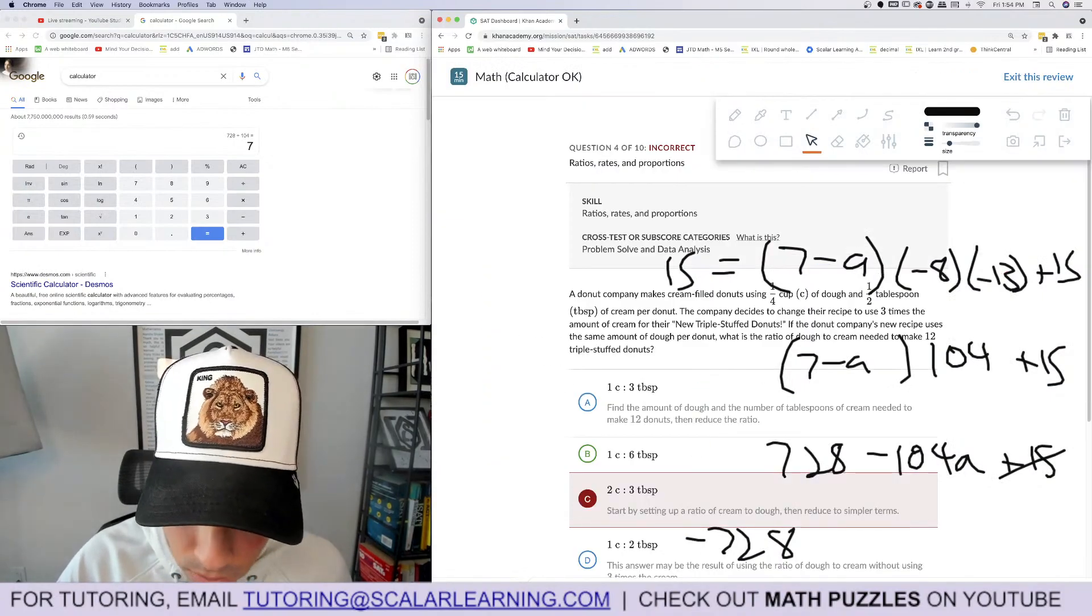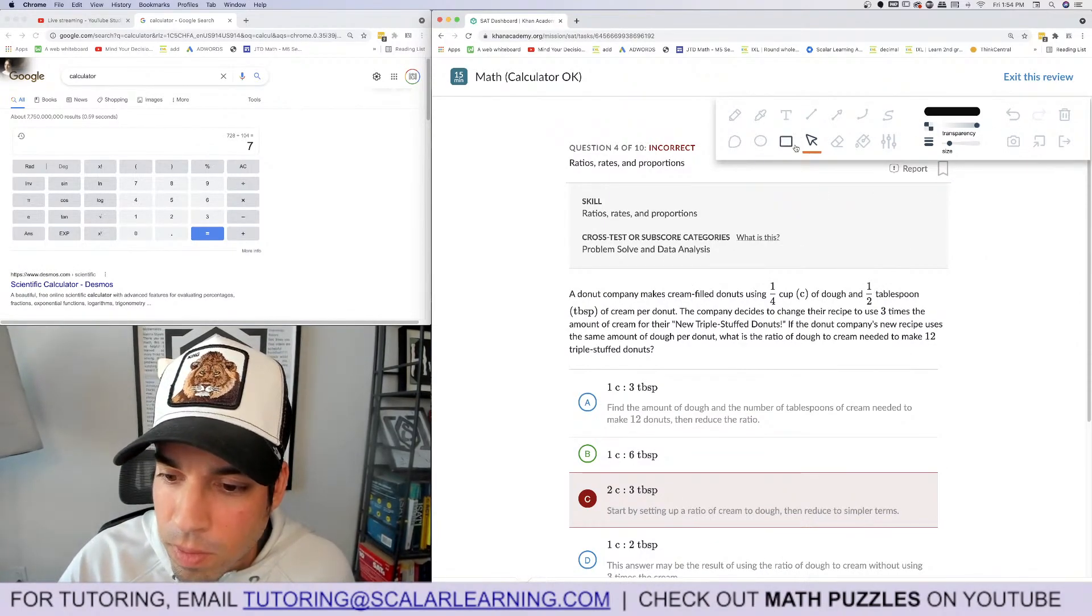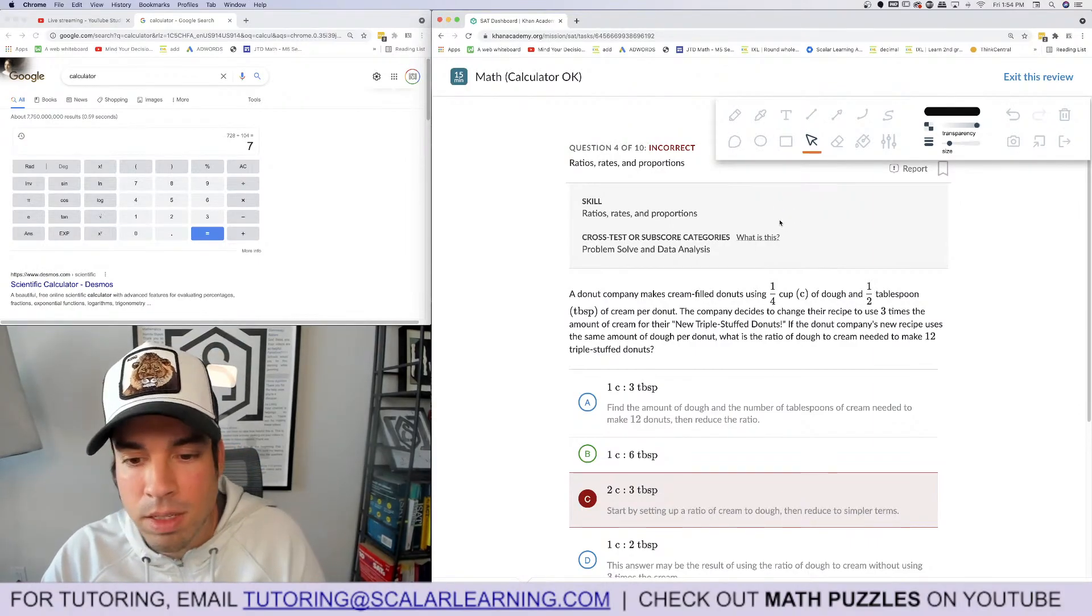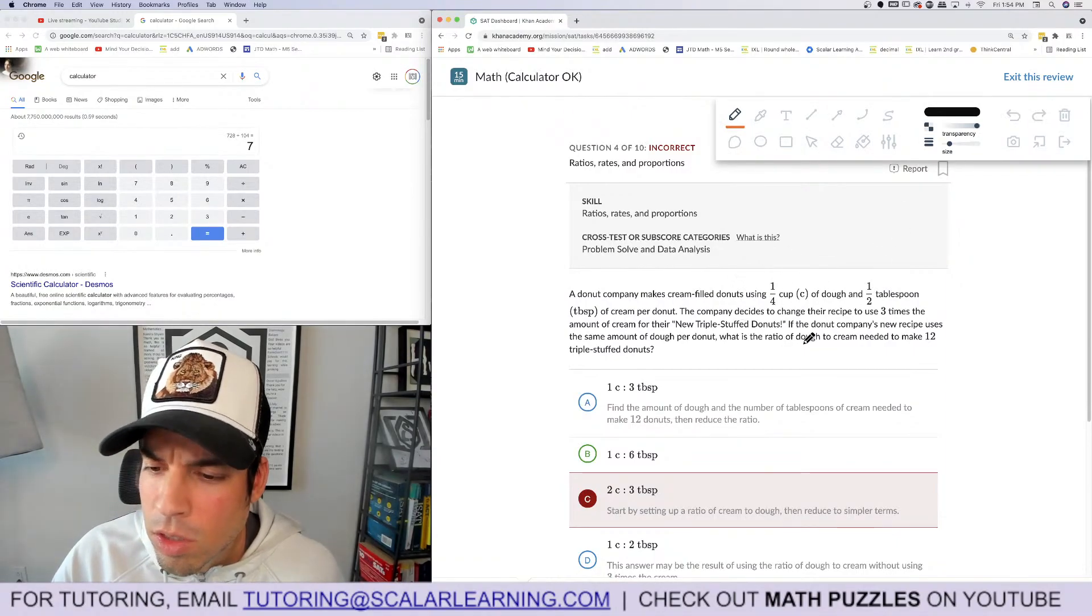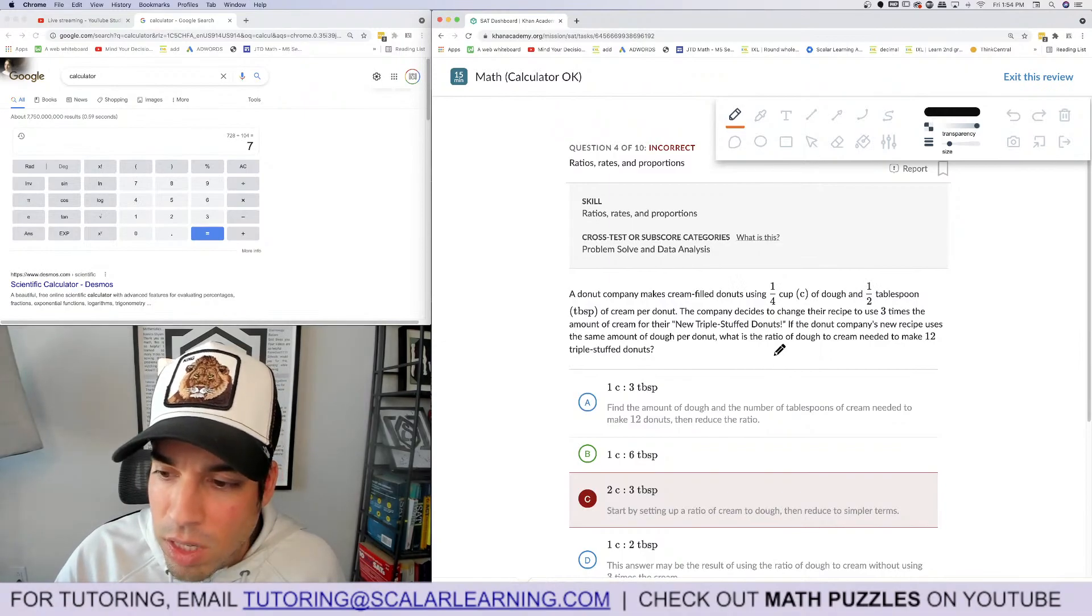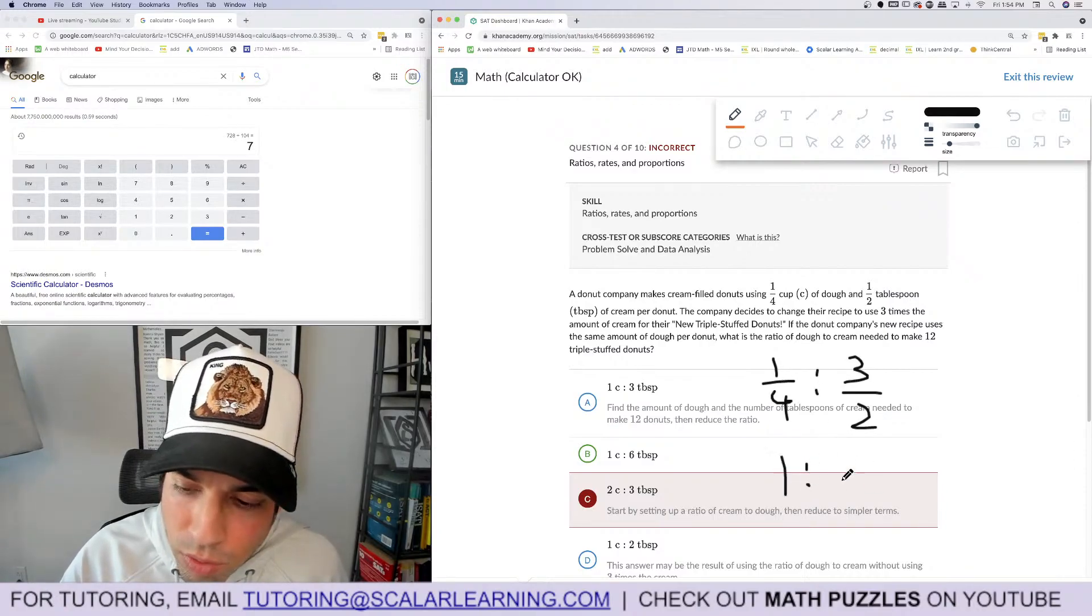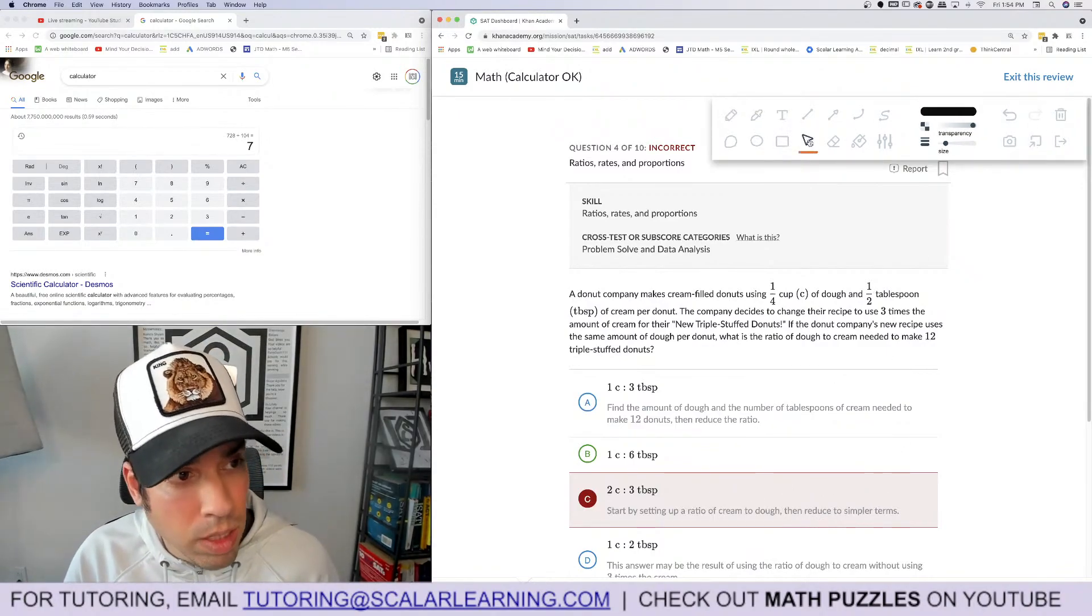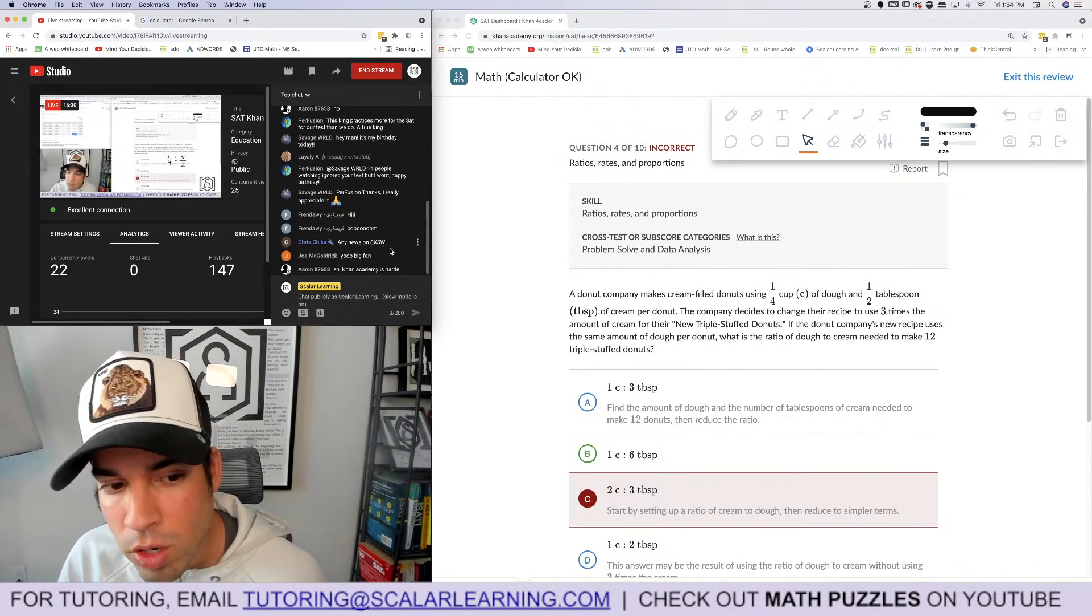I got four wrong. What did I - how did I get that wrong? That's weird. So the company decided to change the recipe to use three times as much cream. Oh, I messed it up - I wonder if you guys caught that. I multiplied this by three, that's the dough. So three times as much cream, that's three halves. So then it's one fourth to three halves, and then you multiply those by four and you get one to - that's 12 over two which is six. So that was just a reading mistake, sorry about that. I'll see if anybody caught it as I was doing it.